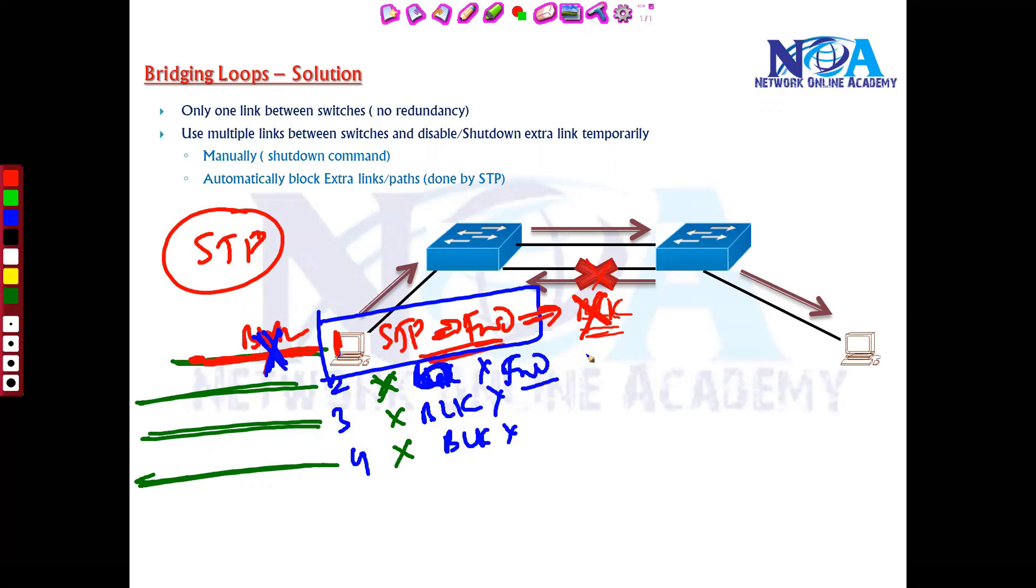So the STP will automatically come to know that this link is down. So immediately it is going to make this port into forwarding. So less than 50 seconds, there is a timer as well - we will see the timer also. Less than one minute we can say, around 50 seconds is the maximum time it will take.